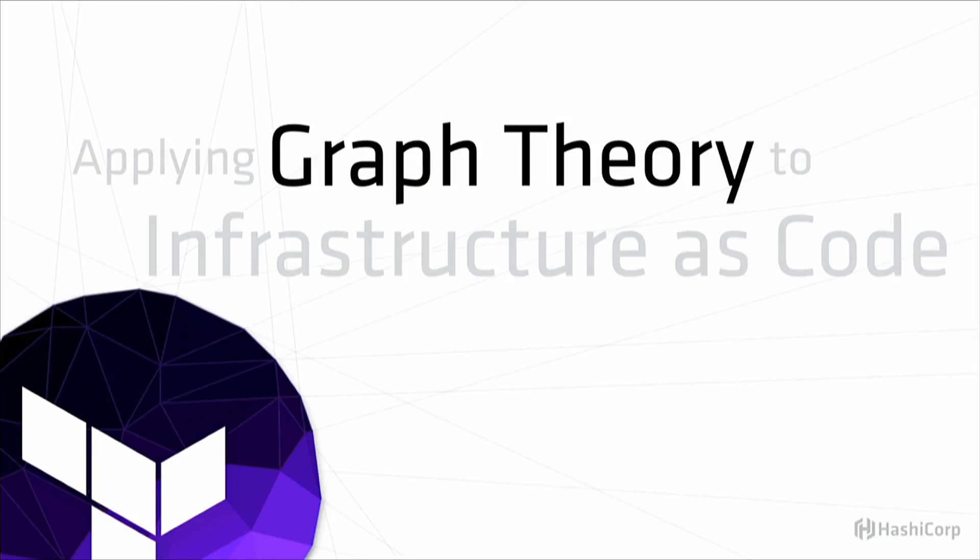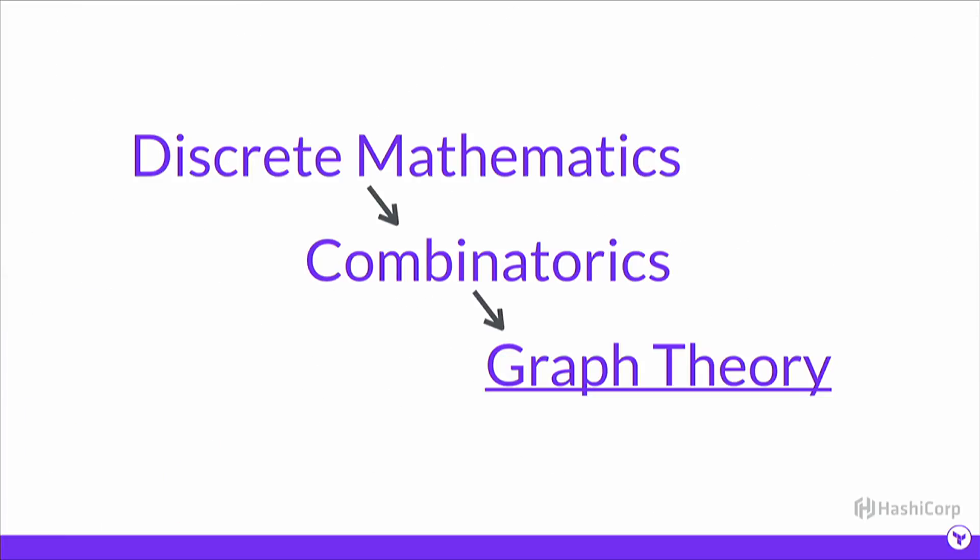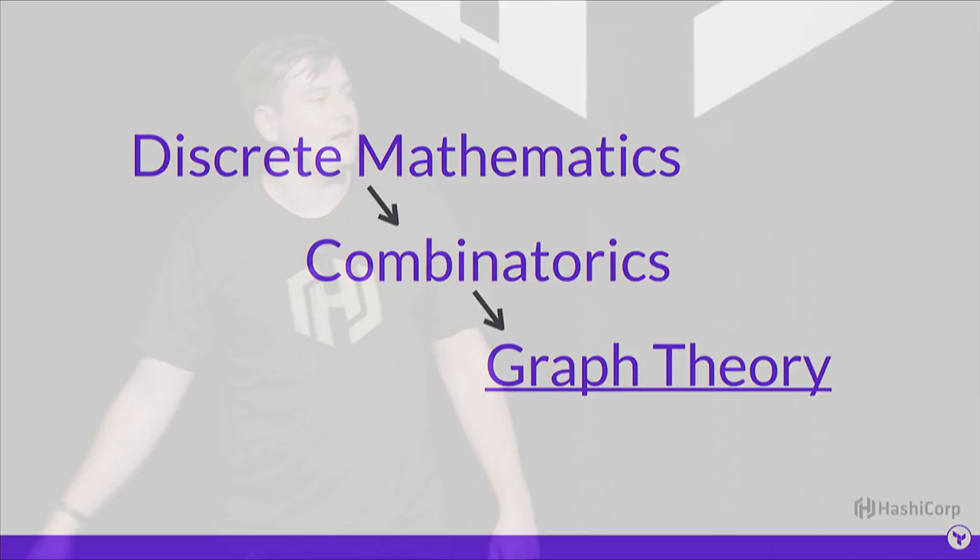Now we need a crash course in graph theory so we can dive into Terraform's core. That sounds really scary, but it's not going to be. Graph theory is a division of combinatorics, which is under discrete mathematics. What's great about graph theory is a couple of composable examples will really give you the ability to know and understand the basics enough to be dangerous. So that's what we'll do — just a bunch of examples that fit together.